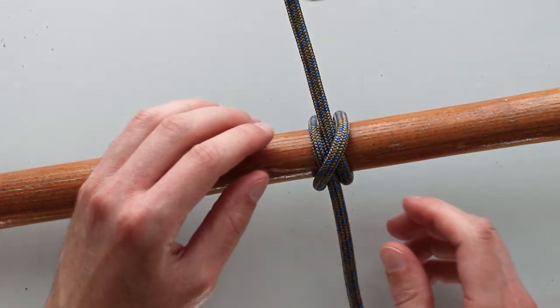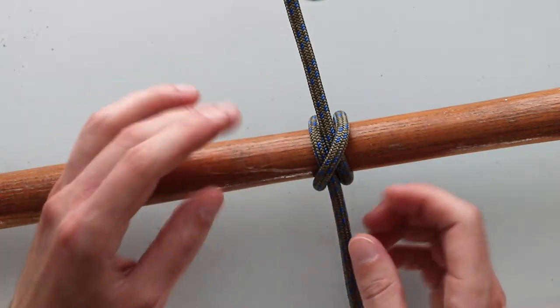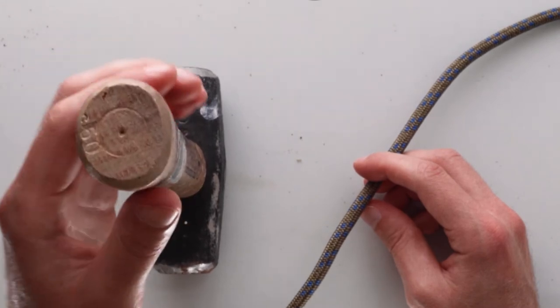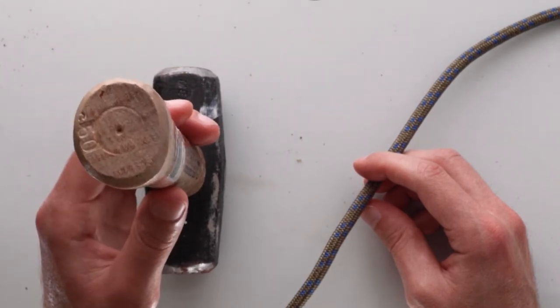Now I'll show you the second method and I'm going to bring in a vertical pole to show you how to do that. I've got a small sledgehammer here and this is going to act as our vertical pole for tying the clove hitch.